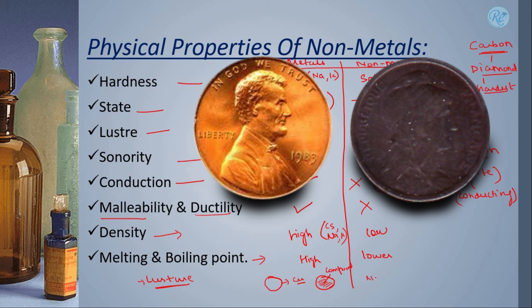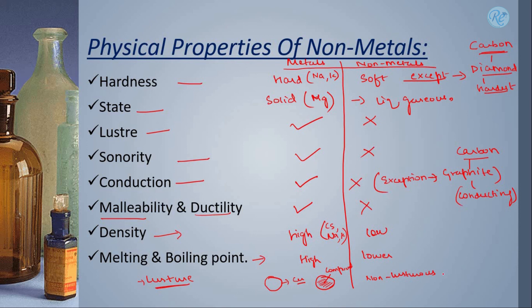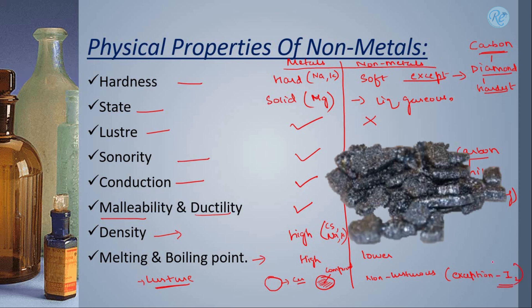But pure metals are highly lustrous. While non-metals are generally non-lustrous. That is, they do not have that shiny appearance. But again, the exception is iodine. As you can see, iodine is a non-metal but is highly lustrous. It has a shiny appearance.